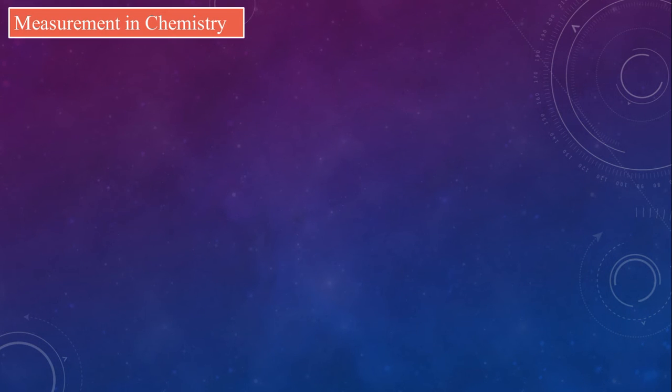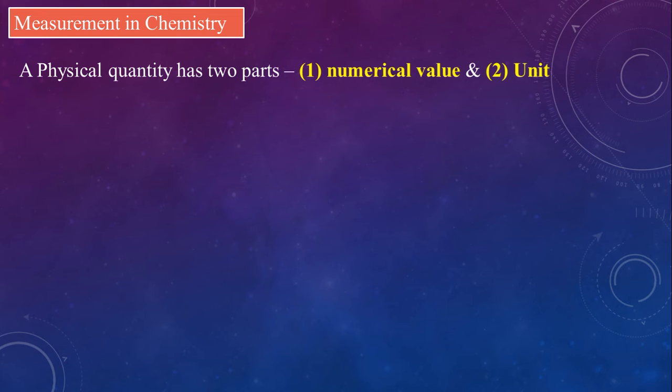Whenever we do any measurement in chemistry, a physical quantity which is measured has always two parts: a numerical value and a unit. For example, if I measure length of a pencil, I can say the length is 10 cm. Number 10 is the numerical value, cm is the unit. Suppose we write any physical quantity without a unit, it will not carry any meaning.